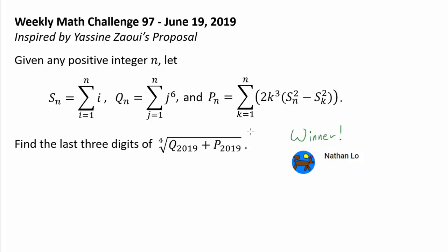We have P_n being the sum from k equals 1 to n of 2k cubed times S_n squared minus S_k squared, where S_n appears inside P_n. And we wish to find the last three digits of the 4th root of Q_2019 plus P_2019.